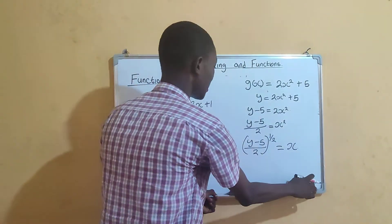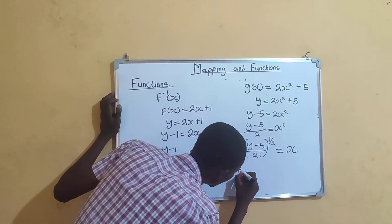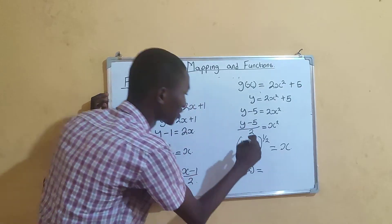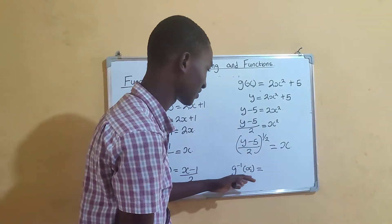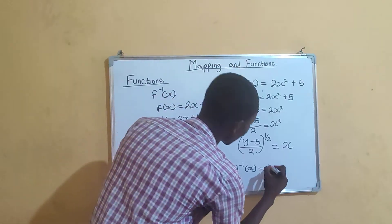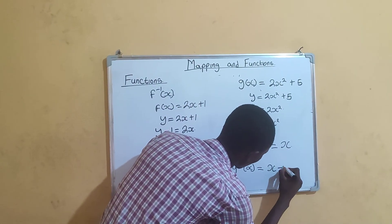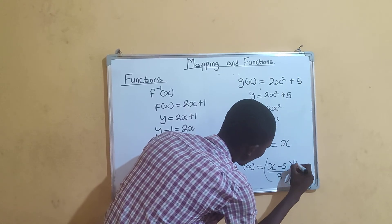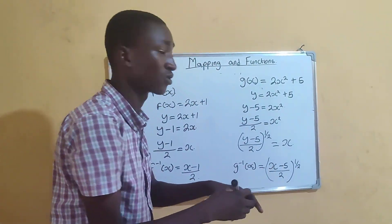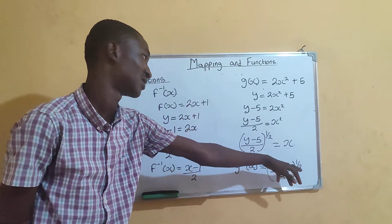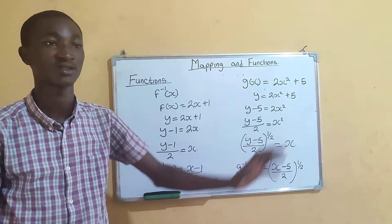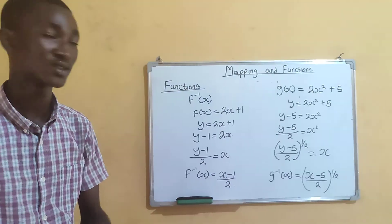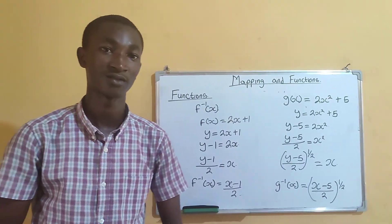Finalize by replacing y with x: g⁻¹(x) = ((x − 5) / 2)^(1/2). Note that raising to the power of 1/2 is the same as taking the square root. That's where we'll stop for functions. The next class will cover mapping. Thank you.